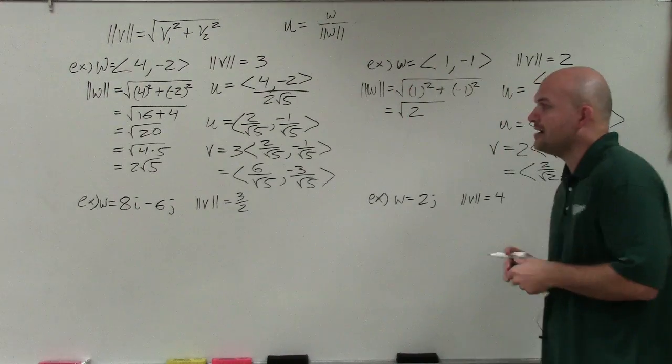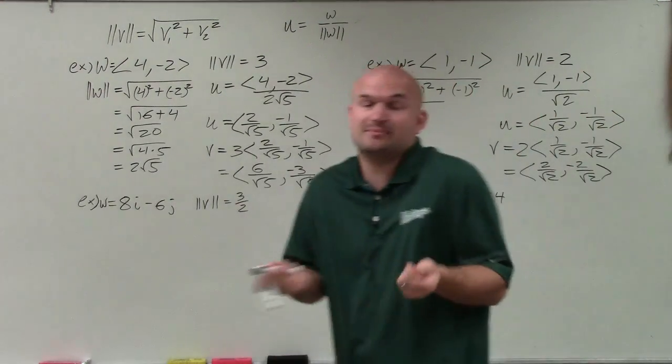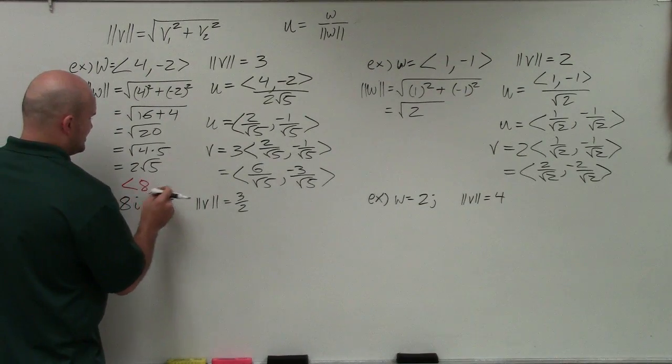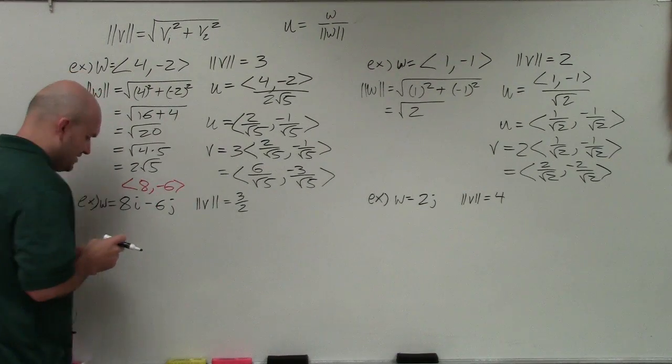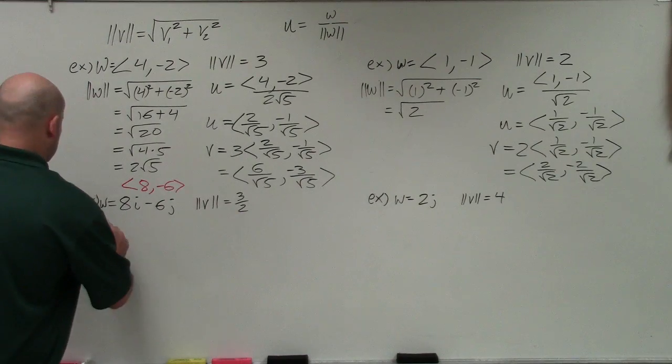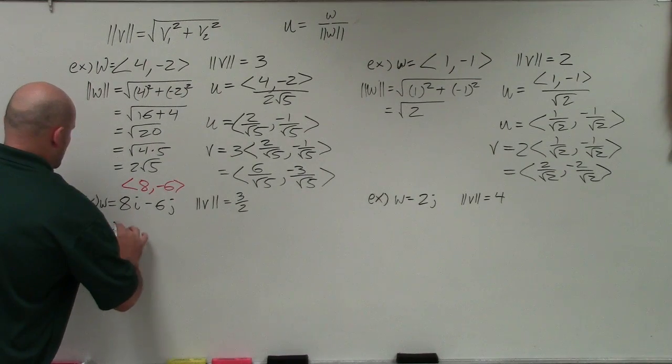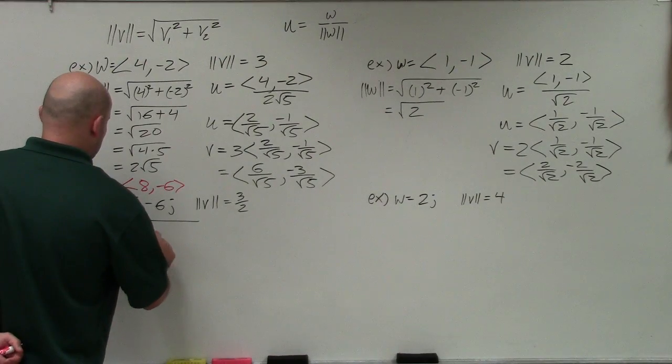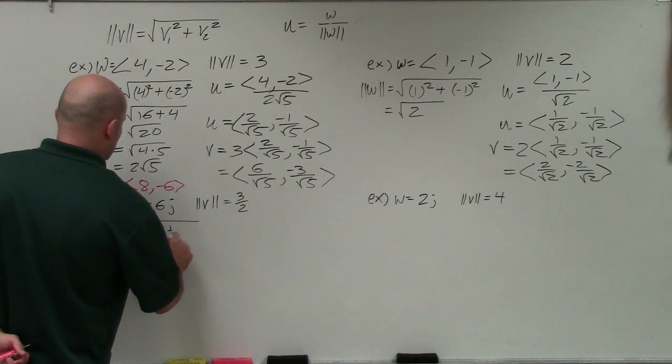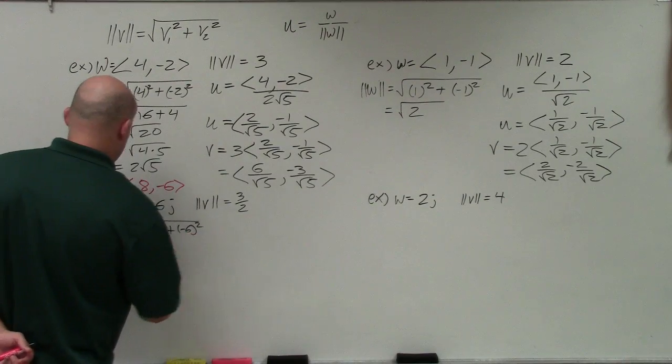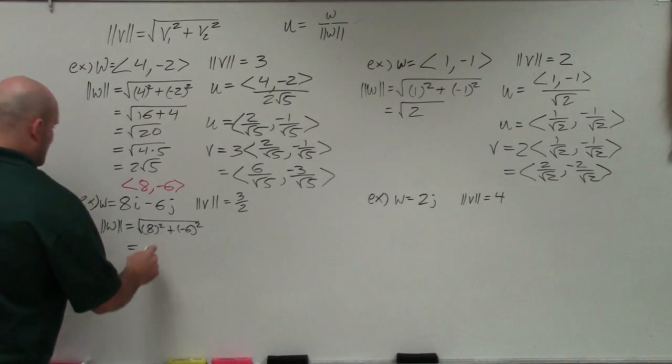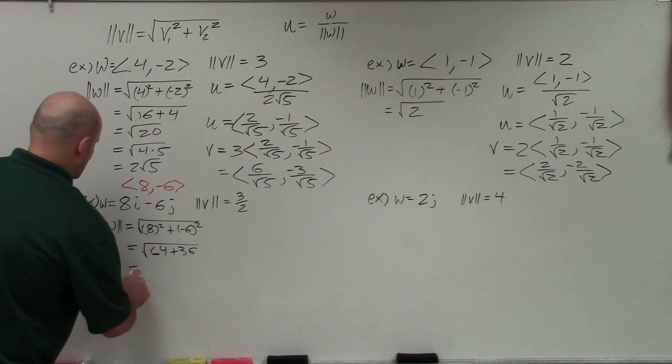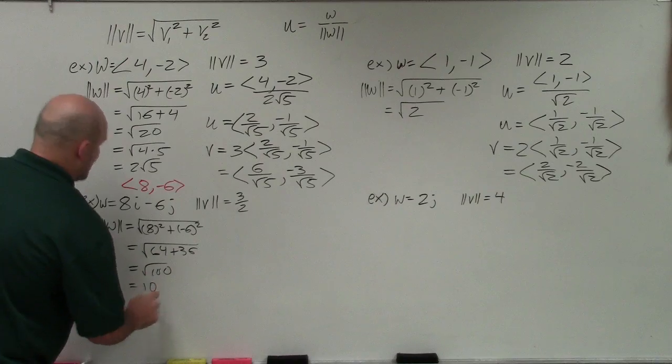All right, in the next example, now we have a vector that is in linear combination. But again, guys, when you're dealing with something in linear combination, I just like to write it in component form. So therefore, I'm just basically doing the exact same operations. So magnitude of w is going to be 8 squared plus negative 6 squared. So that becomes 64 plus 36, which equals square root of 100, which equals 10.